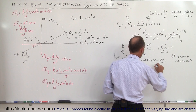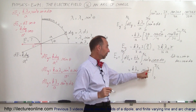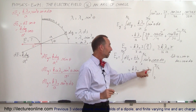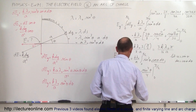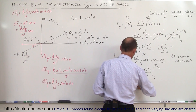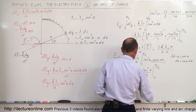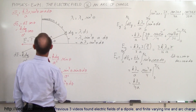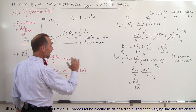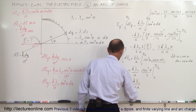Integrating gives (k·λ₀/a) times [sin⁴(θ)/4] evaluated from 0 to π/2. Plugging in the lower limit gives zero; plugging in the upper limit, sin(π/2) = 1, so sin⁴(π/2)/4 = 1/4. Therefore Ex = k·λ₀/(4a).